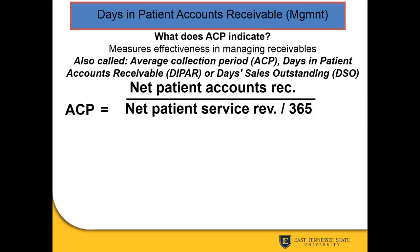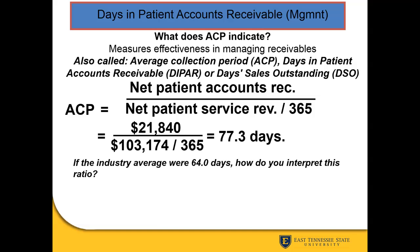Days in patient accounts receivable refers to how long an account remains open before we receive the money owed. We take net patient accounts receivable and divide that by net patient service revenue divided by 365 — because we're looking at this in terms of days per year. Using the numbers, we take 21,840 divided by 103,174 divided by 365, which gives us around 77 days.